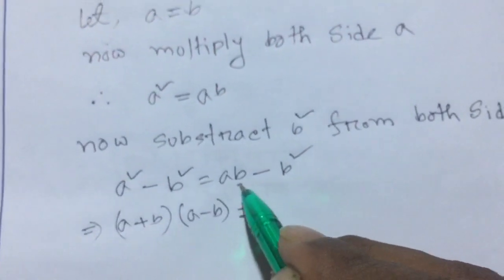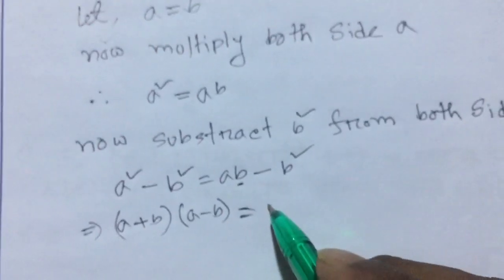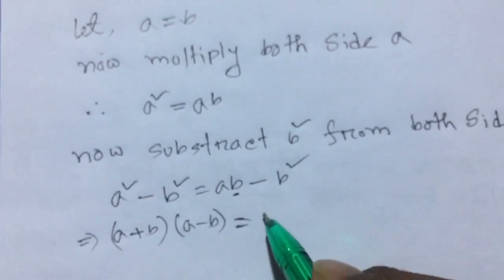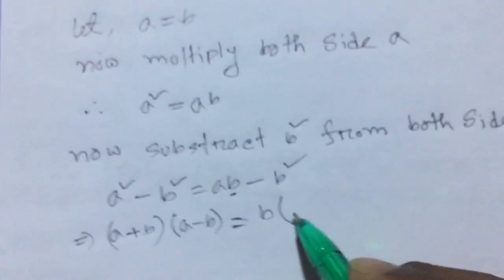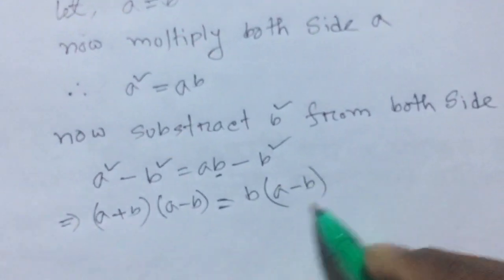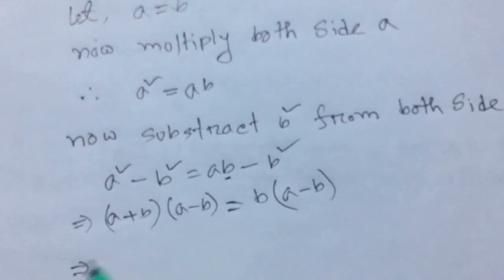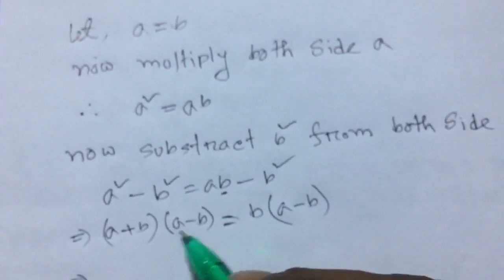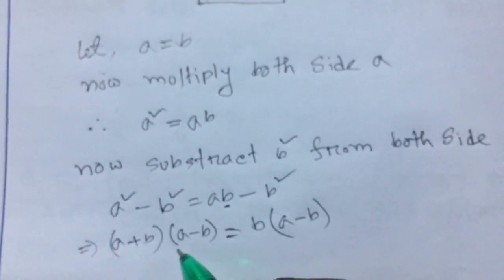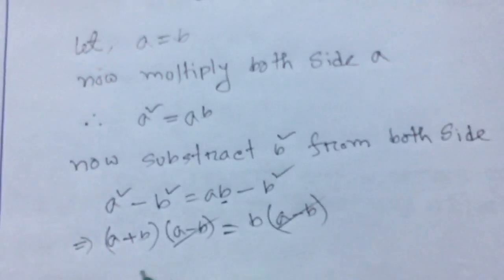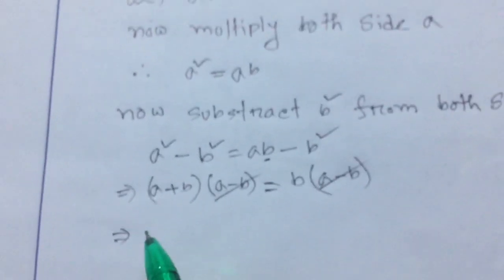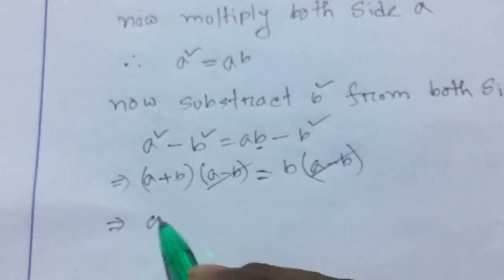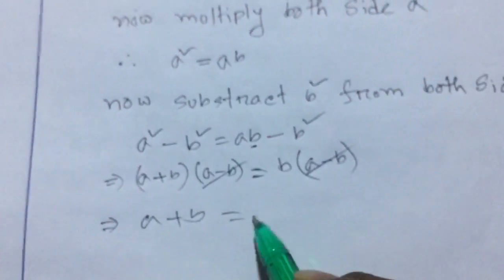We can see b, we can take common a minus b. Now both sides we can see that a minus b, a minus b cancelled. Then a plus b equal to b.